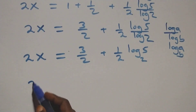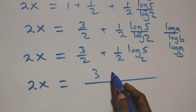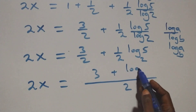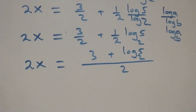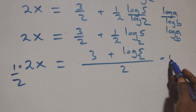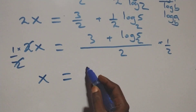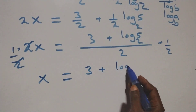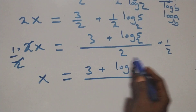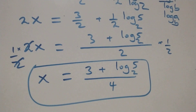Bringing this together as one fraction: 2x equals (3 plus log base 2 of 5) over 2. Multiplying both sides by 1 over 2, the 2s cancel and we have x equals (3 plus log base 2 of 5) all over 4. That is the value of x: x equals (3 plus log₂5) over 4. Let's now verify this satisfies the original problem.